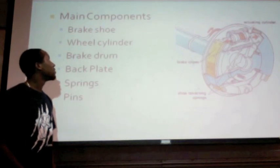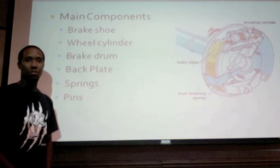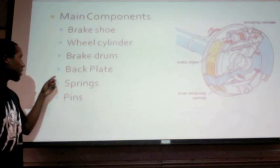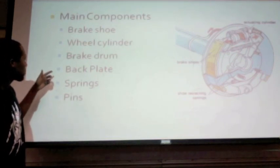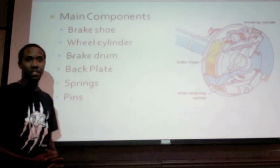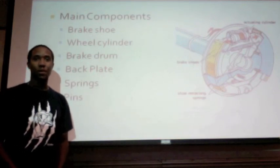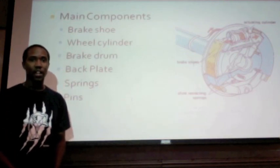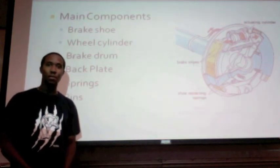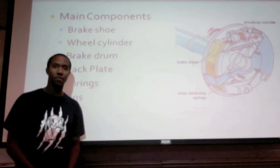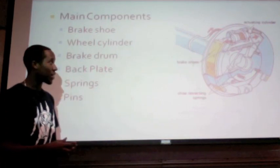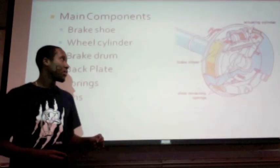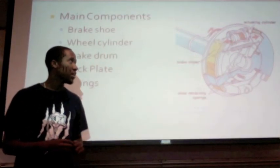The main components of the brake assembly are the brake shoe, the wheel cylinder, the brake drum, the back plate, the springs, and the pins. The brake shoe is made up of two pieces of sheet steel welded together. The components of the brake shoe are the lining table, the web, the nib, and the brake lining. The web is like a crescent shape and it has holes in it to secure the pins and springs.